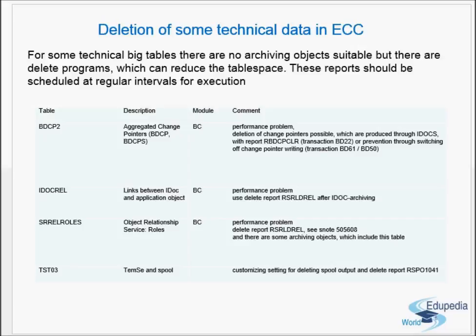The first table is BDCP2 — the aggregated change pointers (BDCP, BDCPS). Deletion of change pointers is possible using report RBDCPCLR, transaction BD22, or prevention through switching off change pointer writing via BD61 or BD50.